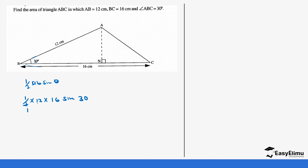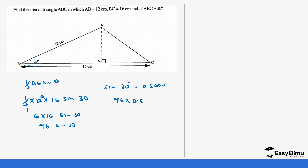So this is the same as 1/2 times 12, which gives 6. So this is the same as 6 times 16 sine 30. 6 times 16 gives us 96, so it's 96 sine 30. You can work out this question using a logarithm or you can check your tables to get sine 30. From the tables, sine 30 is 0.5000. So basically it's 96 times 0.5, which gives us 48. So the area is 48 centimeters squared.